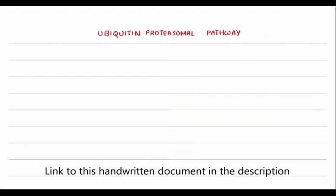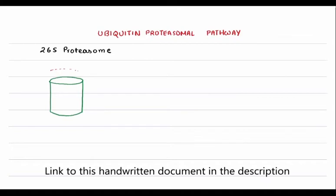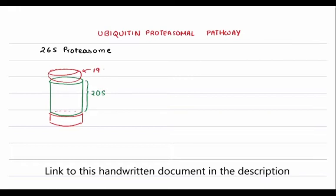First, let's see what is the structure of the ubiquitin proteasome as a whole. Basically, the proteasome is a 26S complex and the structure is something like a cylinder. The cylinder has got two different parts: the green part over here is the 20S complex and the red parts on either side are the 19S complex.